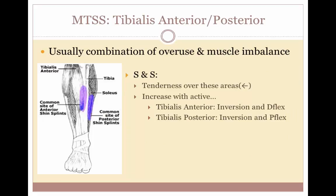The tibialis anterior and posterior muscles may also contribute to medial tibial stress syndrome. These two muscles are on opposite sides of the calf, and any imbalance or overuse of either muscle may result in shin splints. Signs and symptoms include tenderness over the muscle belly or origin point. Pain increases with active movement — for tibialis anterior involvement, pain occurs with inversion and dorsiflexion; for tibialis posterior involvement, pain occurs with inversion and plantar flexion.